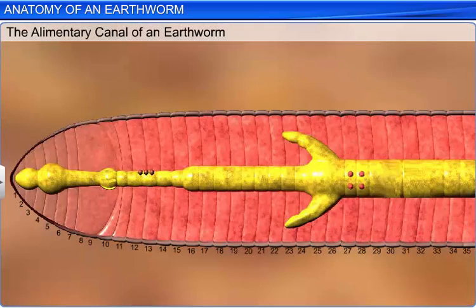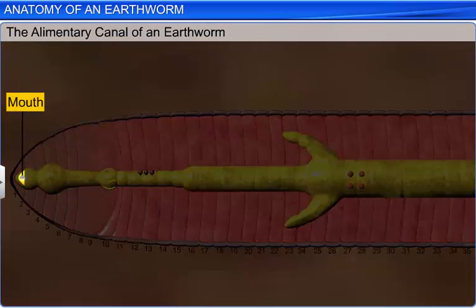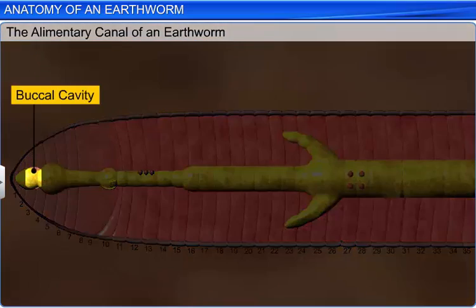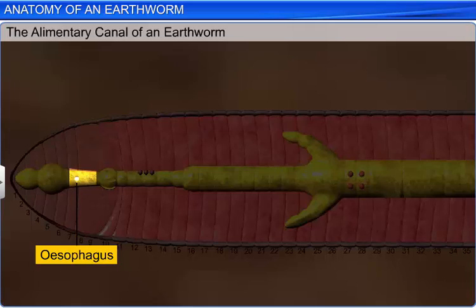Towards the anterior end, the first segment bears the mouth, which opens into the buccal cavity up to the third segment. The buccal cavity is followed by a muscular pharynx, which continues into a narrow esophagus between the fifth and seventh segments.